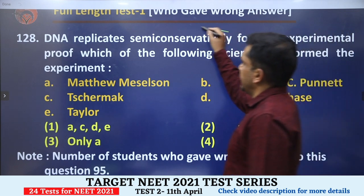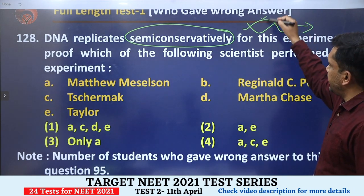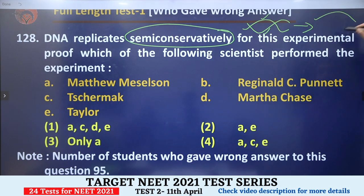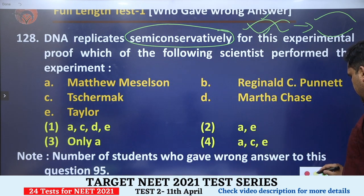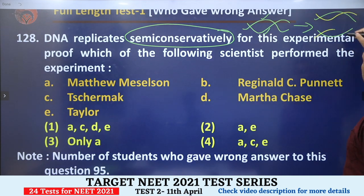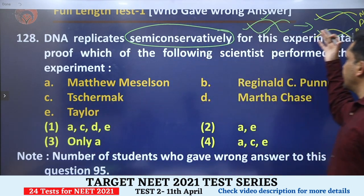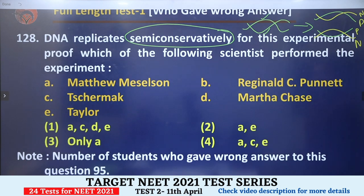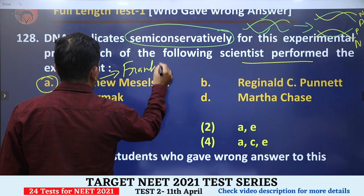Question 128: DNA replicates semi-conservatively. Semi-conservative means that DNA has two strands — when it replicates, one parental strand is conserved and one new strand is synthesized. So 'semi' means half and 'conservative' means to conserve. The old parental strand is preserved, making it semi-conservative. Which scientists performed the experiment proving this? Matthew Meselson and Franklin Stahl — these two scientists proved the semi-conservative mode of DNA replication.